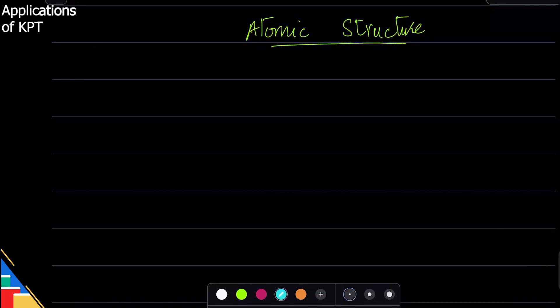So atomic structure is actually one of the easiest chapters because we have been going through this. We have reviewed it many, many times. And the basic idea is really simple.